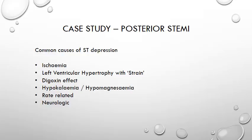Myocardial ischemia causing ST depression tends to be seen in various leads with varying morphology. An ST depression seen in localized leads such as the inferior or high lateral leads tends to be reciprocal change to a STEMI elsewhere. Subendocardial ST depression is usually seen in leads 1 and 2 and V4 through to V6.